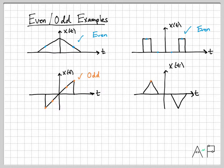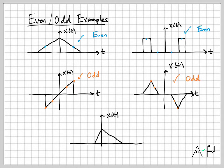One more odd example: pick some time, negate it, and the amplitudes are exactly equal just different in sign. Pick another time, negate it — again, the amplitudes are the same just negative in sign. That happens for every single point, so this is an odd signal. But a signal doesn't have to be even or odd. Here's an example where I pick a time t, go to the corresponding negative time, and these amplitudes aren't the same and they're also not the negative of each other. So this is neither an even nor an odd signal.